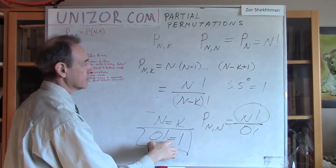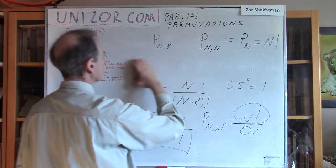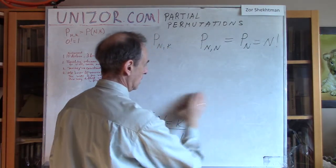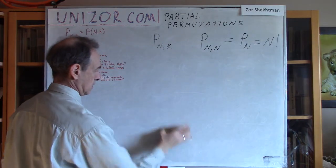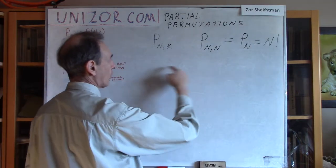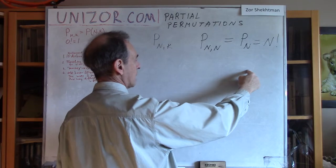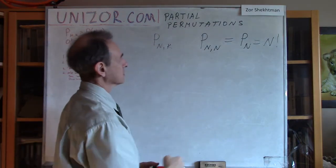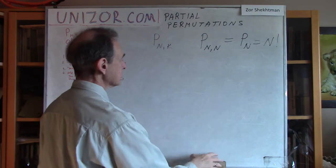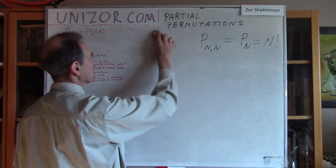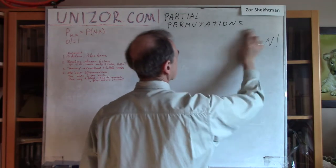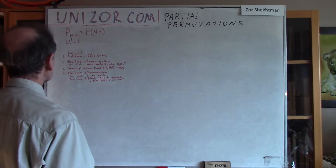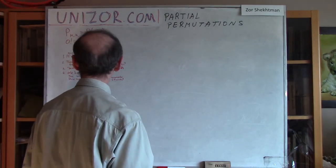With this definition, everything is consistent, and there is no problem with any formula using either the product from n to n minus k plus one, or the shorter formula n factorial divided by n minus k factorial. This is the theory of partial permutations. Let's just have a couple of examples to make sure we understand everything. Alright, example number 1 — I have 4 examples here.